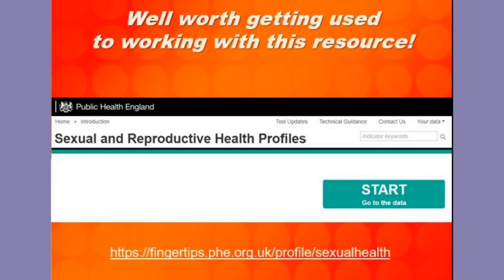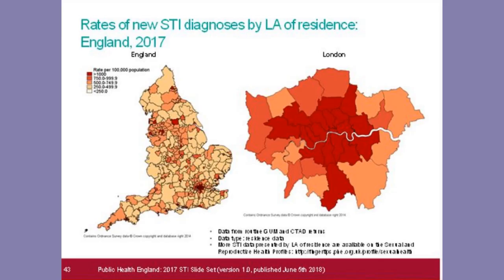A wonderful resource from Public Health England is the Sexual and Reproductive Health Profiles. Click the start button and you can get into statistics and work them out nationally, regionally and even locally. Public Health England also create freely available PowerPoint slide sets of sexual infections across the country. If you're living in other parts of the UK, you'd need to check out the website for the health department of your own particular government.